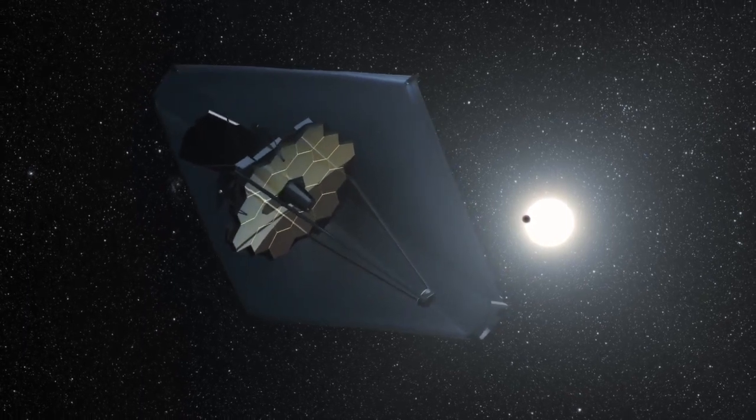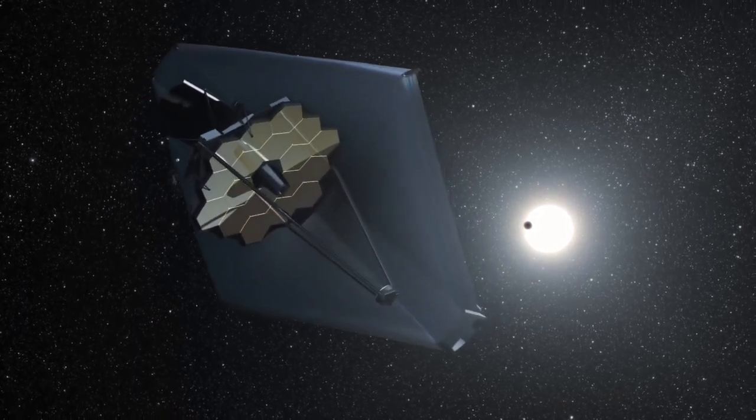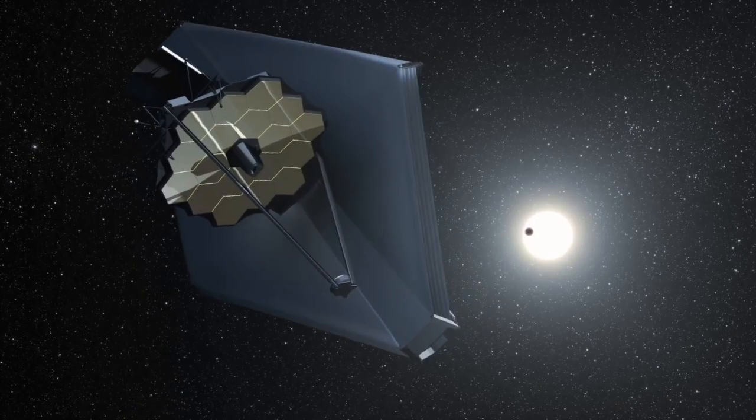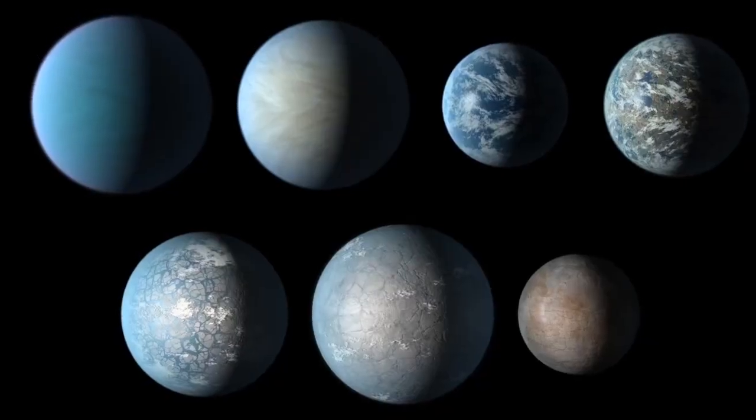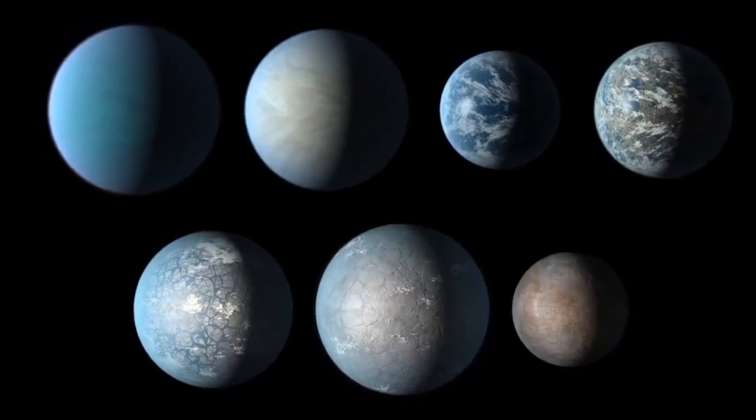The James Webb Space Telescope will spend about a third of its observation time studying exoplanets. A significant portion of this time will be devoted to the TRAPPIST-1 system.